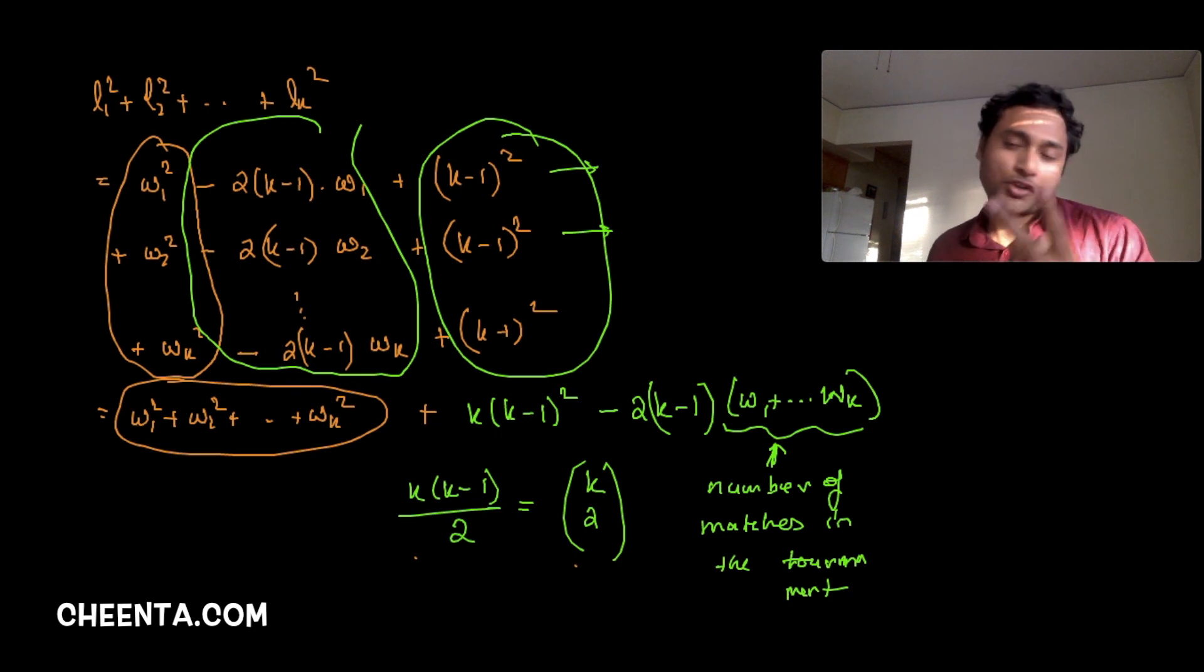So that means this is equal to number of matches in the tournament. And how many matches were there in the tournament? Well, there were K teams. Each pair of team played a match. And that means there are exactly K choose 2 matches in the tournament. So this is K times K minus 1 over 2. K choose 2. You choose 2 teams from these K teams in as many ways as possible. That's the number of matches played in the tournament.